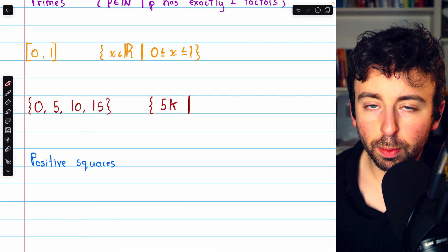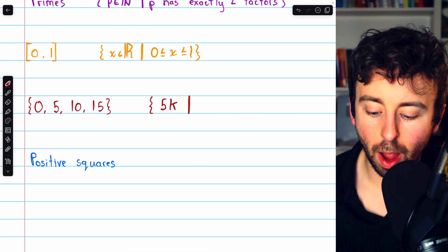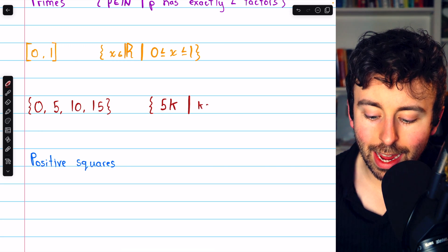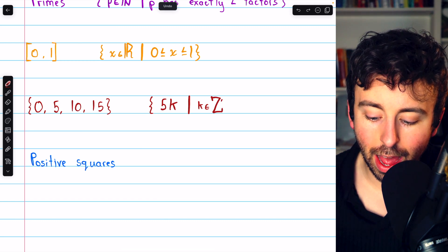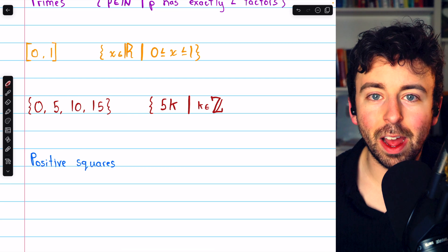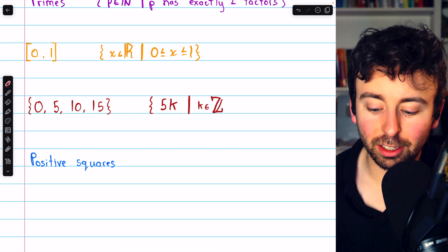So let's state the additional properties. First, k has got to be an integer. Otherwise, we're not actually talking about multiples of 5. We could be talking about 5 thirds and 5 sixths. No, k has to be an integer.